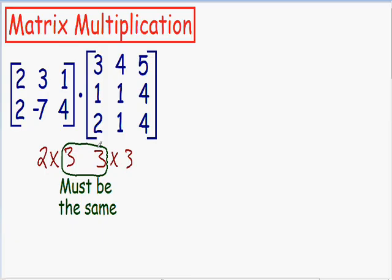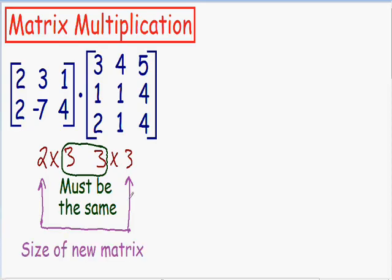After you make sure that your inside numbers are the same, then you can take a look at your outside numbers. I'll draw some arrows to point to the outside numbers. The outside numbers will always give you the size of the new matrix after you're done multiplying. Since the outside numbers are a two and a three, we know the resulting matrix is going to be a two by three matrix. So let's get started with this example — when we multiply two matrices, we're multiplying the rows of the first matrix by the columns of the second matrix.